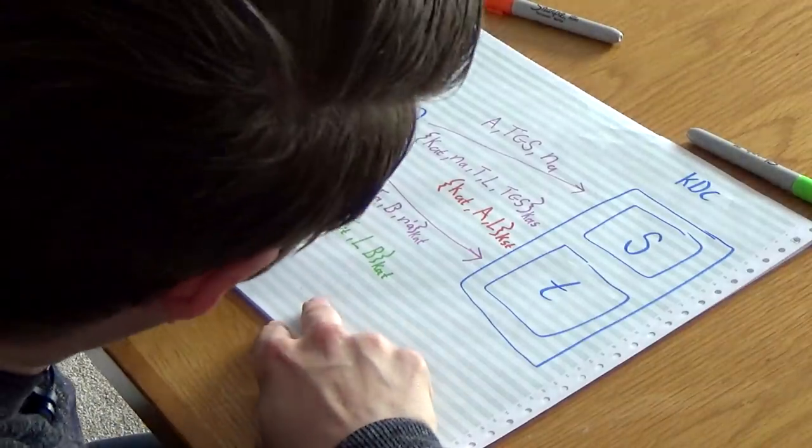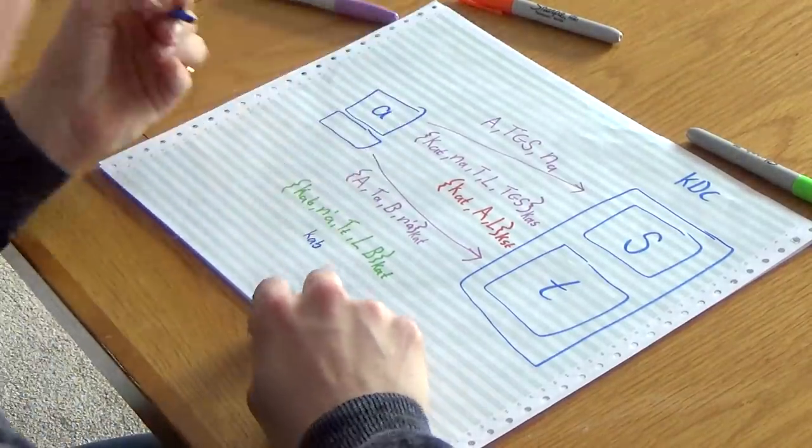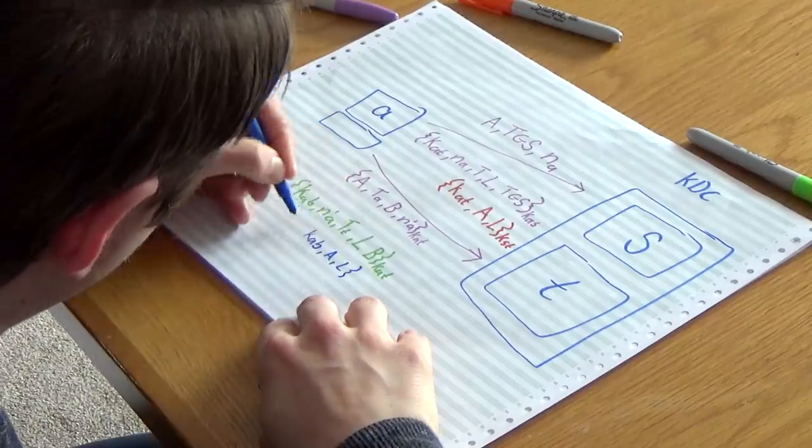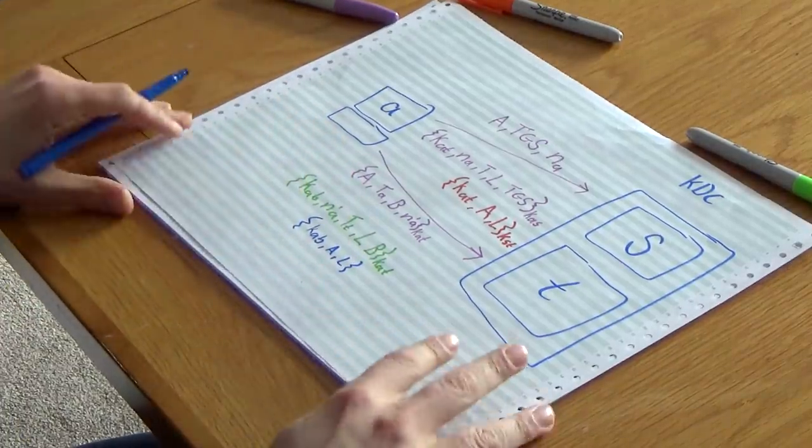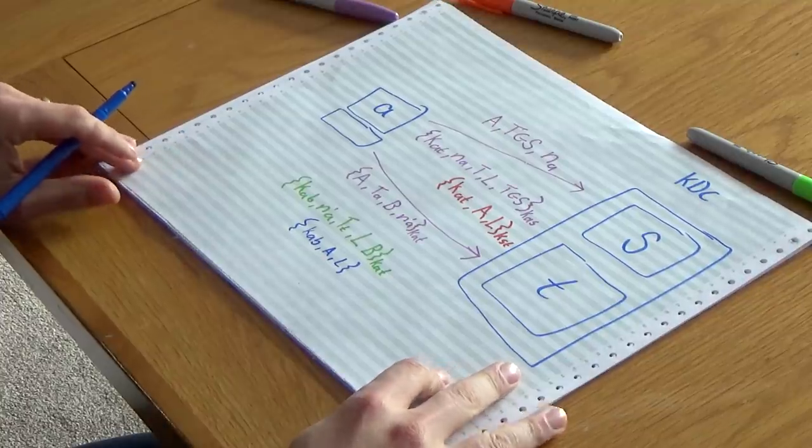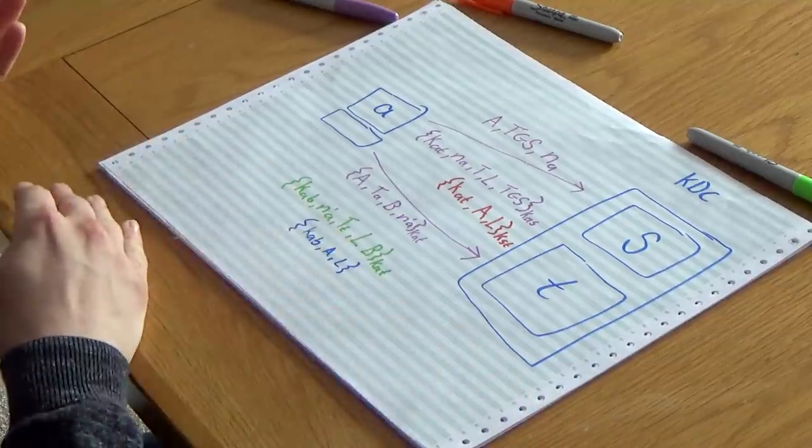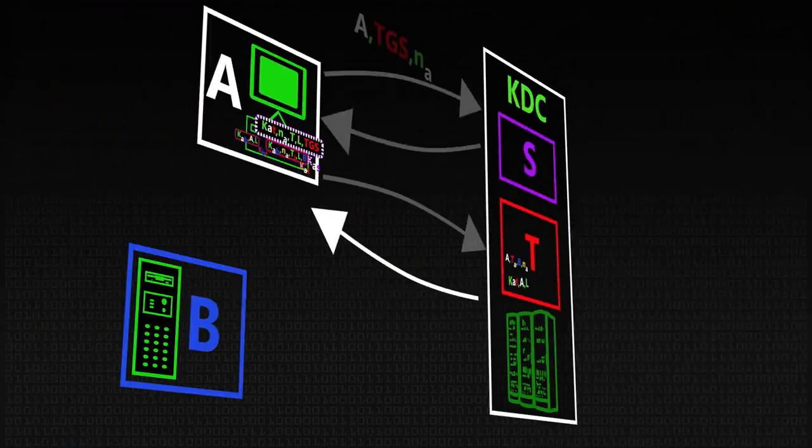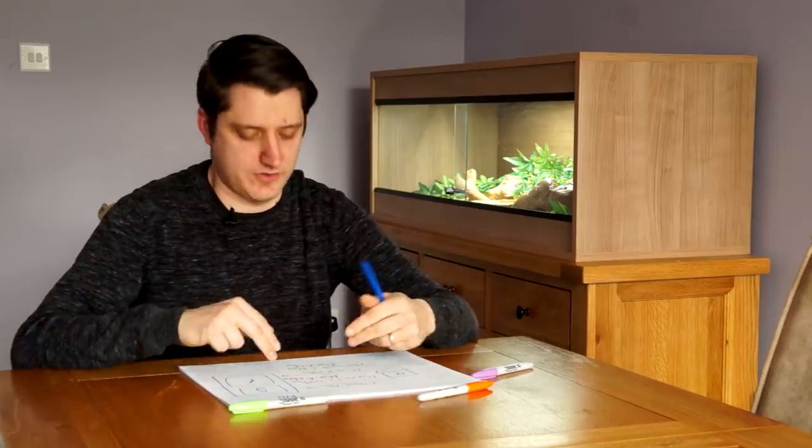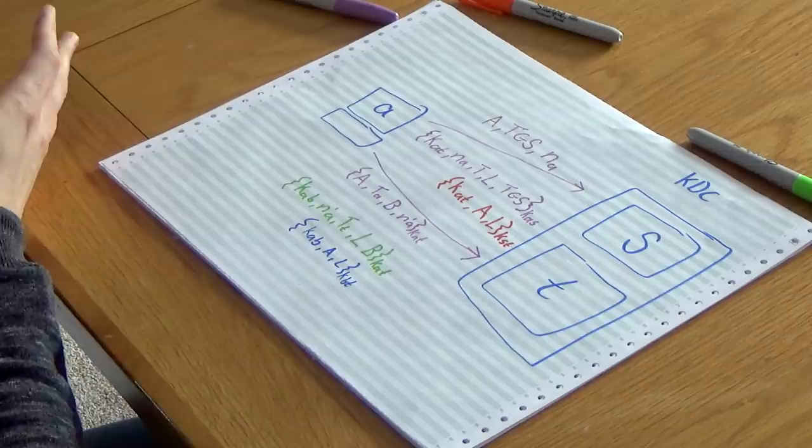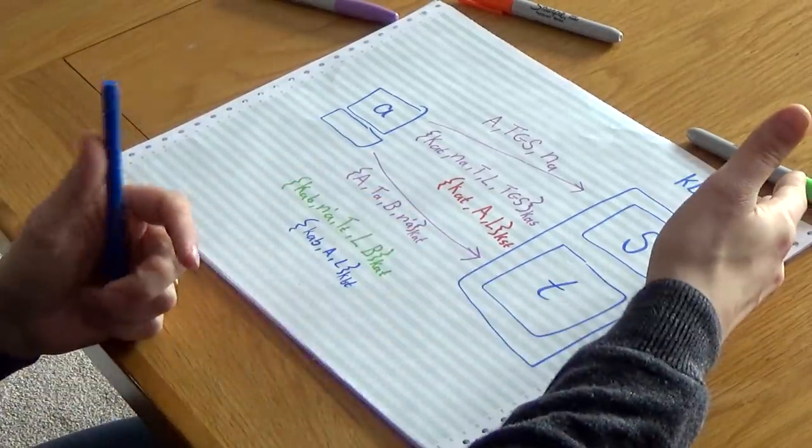And of course, what else does it need to send? Well, we need B to be able to have this KAB in order to have a conversation. So it's going to have to send another ticket to let us access B. So this is going to have KAB. So that's our shared secret. This is, I would like you to talk to A. This is the lifetime. This is going to be encrypted with a key that only T and B have, which is KBT. So that will be some password or other sort of long-term key between this file server B and our ticket-granting server, our key distribution center.